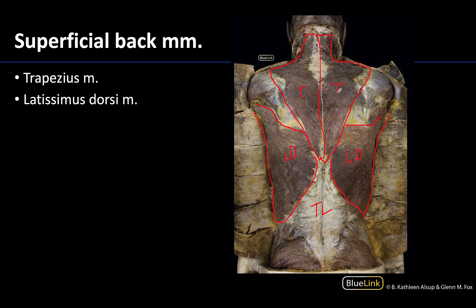Those are the two large muscles. In comparison to some other muscles, since they have such expansive attachment sites, they're typically a little bit easier to identify. If you have any questions about the specifics of the trapezius and latissimus dorsi, please feel free to reach out. Thank you for your time here, and let's move to the next station.